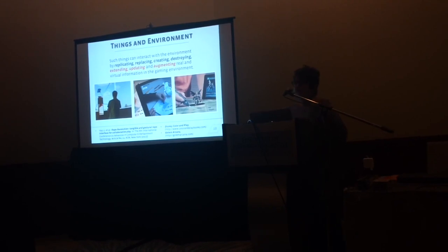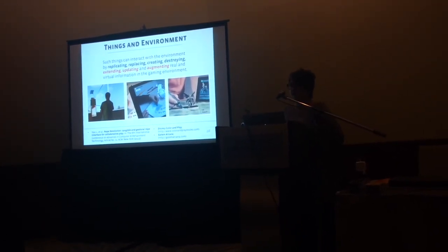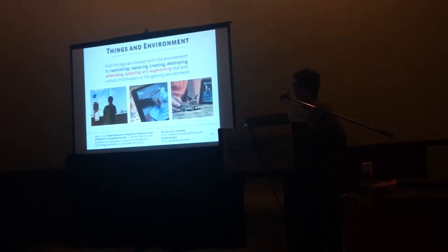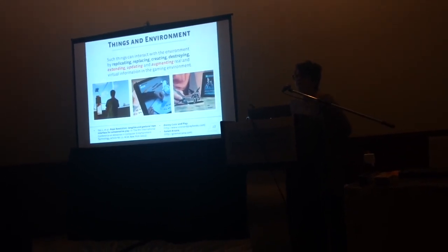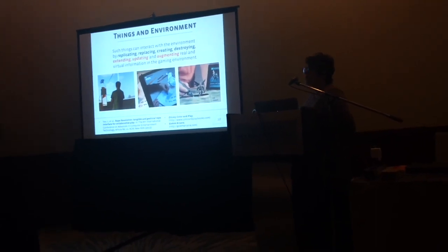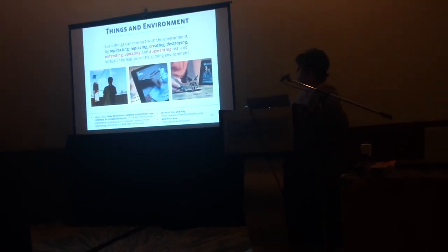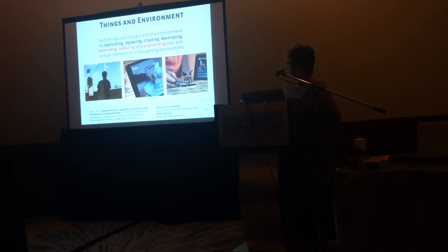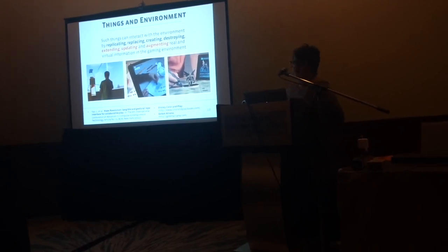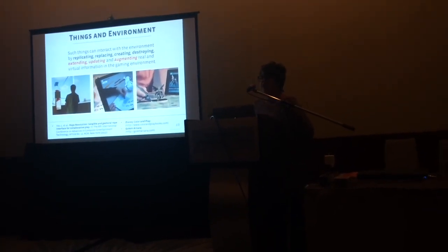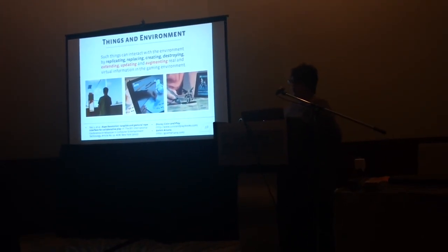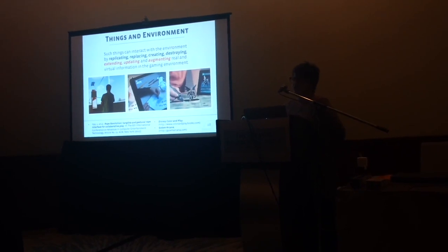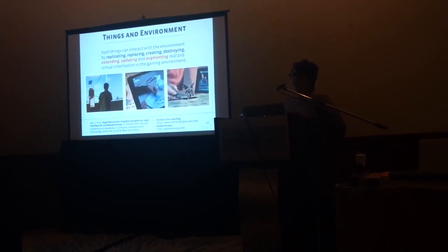In Rope Evolution, there is a physical rope that is extended through a screen, where a virtual rope is connected to a kite. In that case, the game object consists of the same value — a rope that exists both in real and virtual environments. Things can also update their status, as happens in Disney Color and Play, where the paint applied by the user in the coloring book is updated in real time on the visual character on screen. Finally, things can augment information, usually associated with game rules, as happens in Golden Arcana, where the player uses a smart pen to detect NFC tags embedded in game tokens, augmenting game status information such as HP and other movements on the board game.